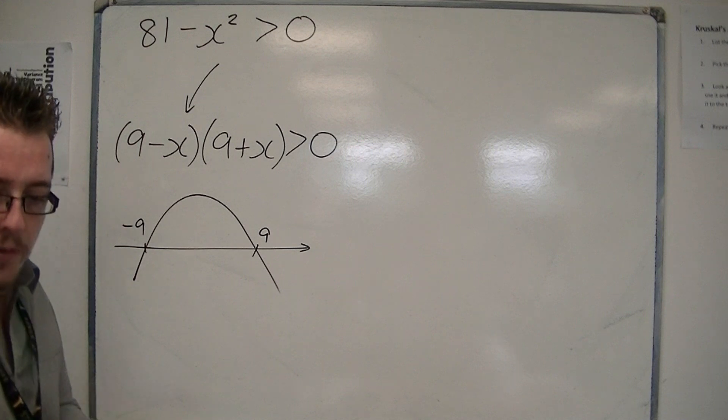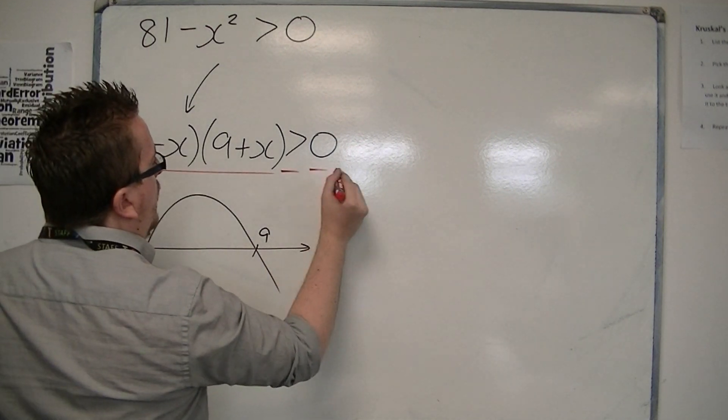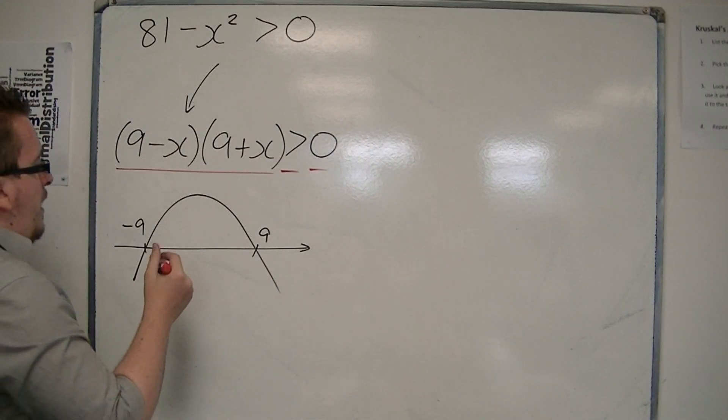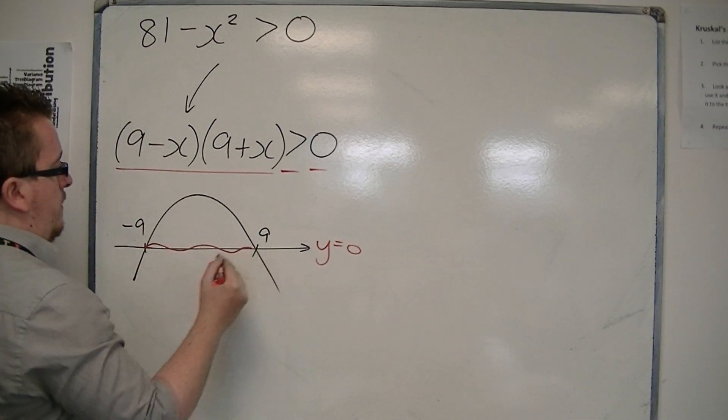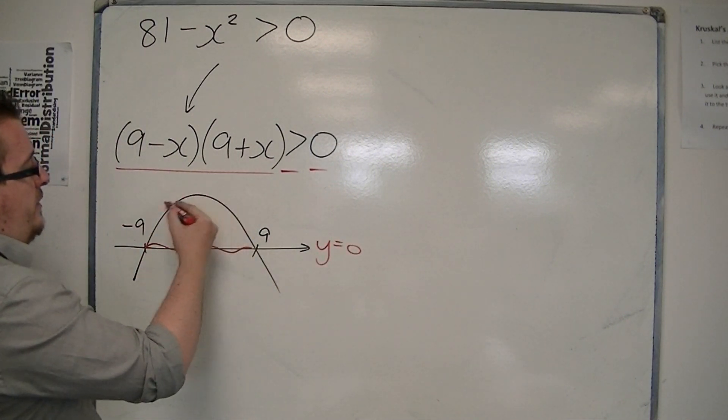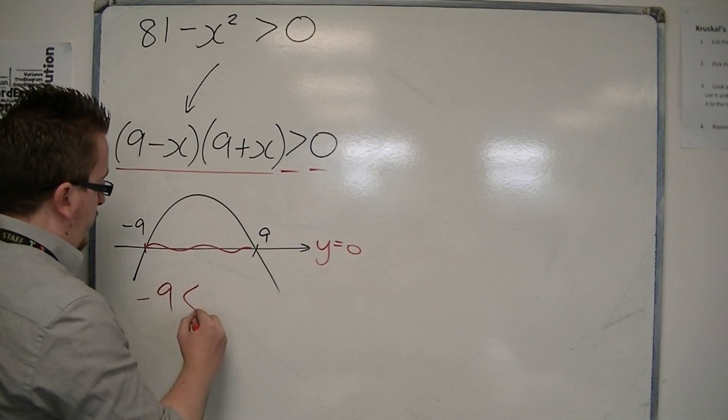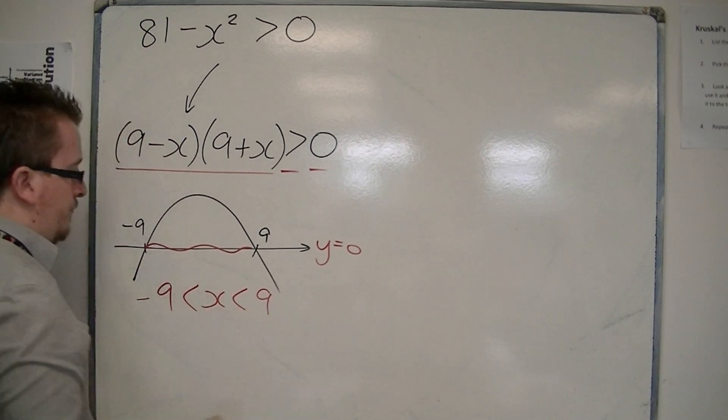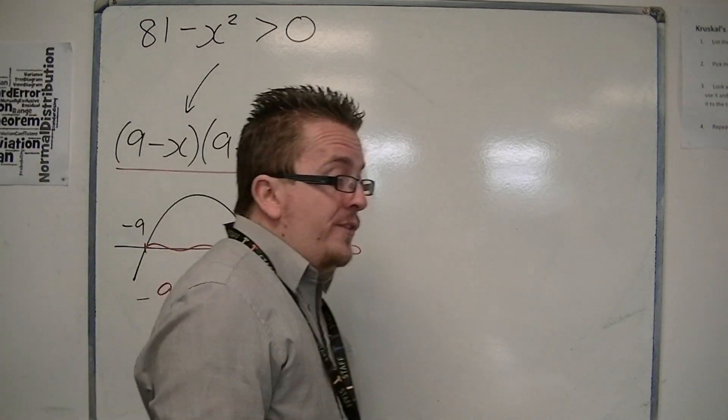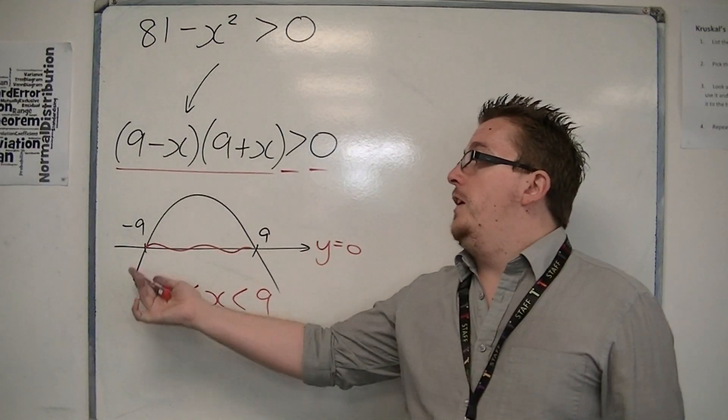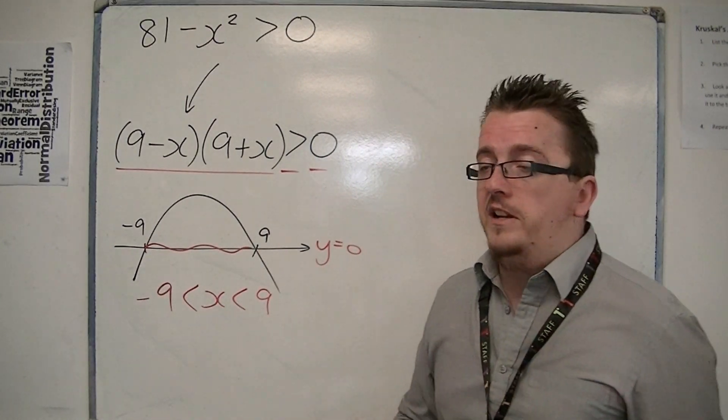And we're being asked, where is the parabola above y equals 0? And it is above the line y equals 0 between minus 9 and 9. So it is above it there. So we can write it as one inequality, because it's just one region. And that is how you can just deal with the inequality. The only difference here from the other videos is that we're dealing with the parabola being the other way up. So you've got to look at it slightly differently.